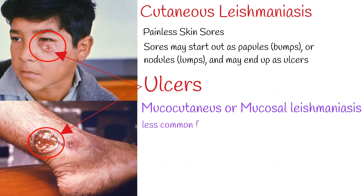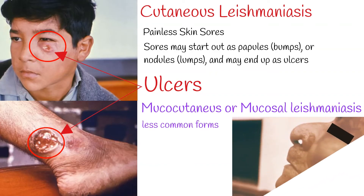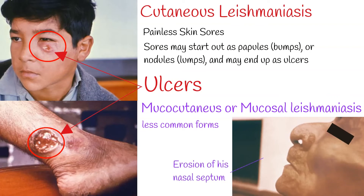Mucocutaneous or mucosal leishmaniasis is one of the less common forms of leishmaniasis, more common in parts of Latin America. Certain types of the parasite may spread from the skin and cause sores in the mucous membranes of the nose, mouth, or throat.